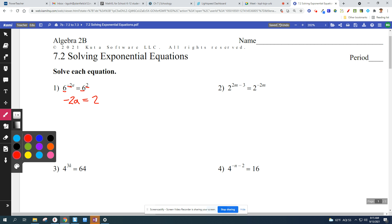Negative 2a equals 2. So real simple equation. We're going to isolate the variable, divide it by negative 2, a equals negative 1. Now they will get harder than that, but that first one was pretty simple.